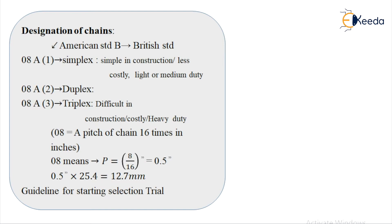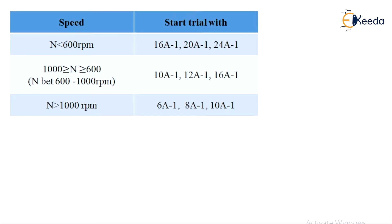Now, to select the chains, we can use trial and error method. As given in the table, for the speeds, if N is less than 600 rpm, we can start a trial with 16A1, 20A1, 24A1. If the speed is between 1000 rpm and 600 rpm, we can go with 10A1, 12A1, 16A1. And if the speed is more than 1000 rpm, we can go with 6A1, 8A1, and 10A1.